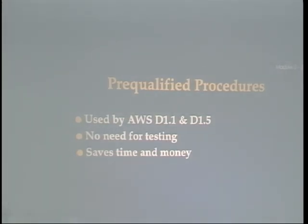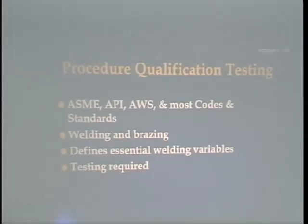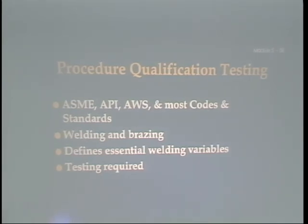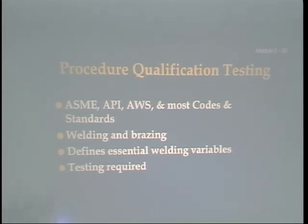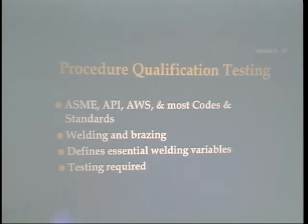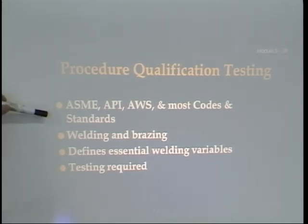One important note to remember: gas metal arc welding short circuit transfer is not pre-qualified. They never allow short circuit transfer GMAW on a pre-qualified procedure — there's no such thing. The reason is because of the low amount of heat input into the weldment when using short circuit transfer gas metal arc. Procedure qualification testing is done by ASME, API, AWS, and most codes and standards. It covers welding and brazing and defines the essential variables.